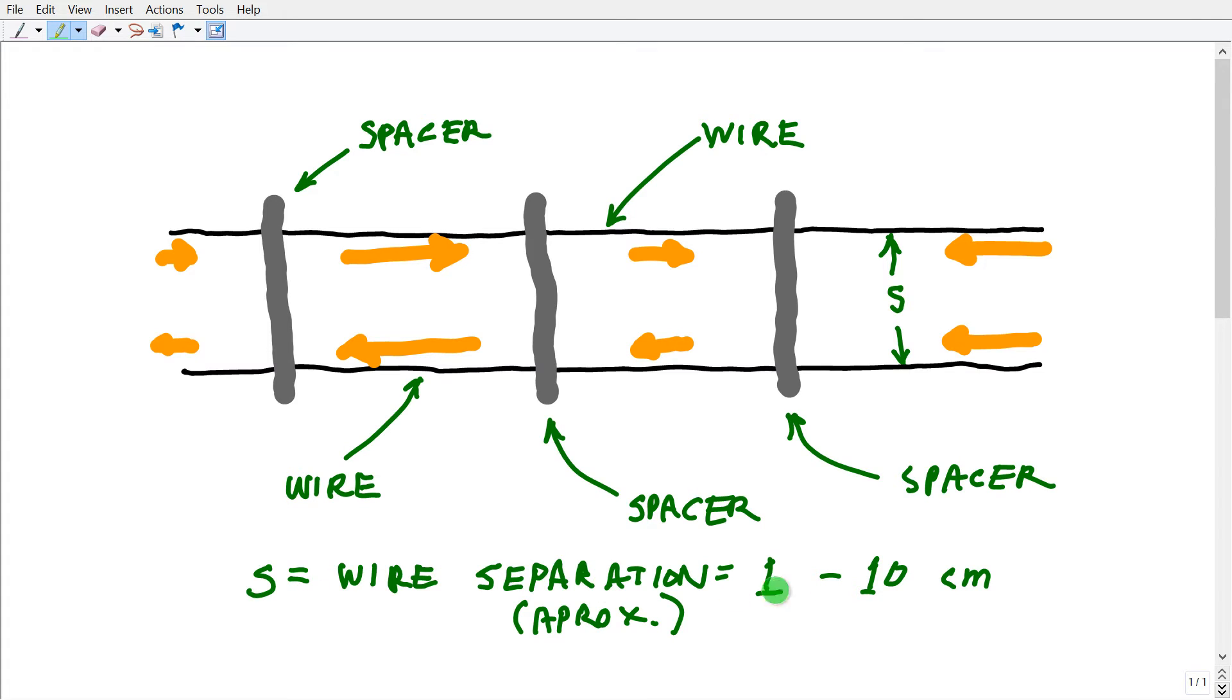The wire separation of an open wire line, incidentally, ranges from about one centimeter to as much as 10 centimeters or sometimes even 20 centimeters. I have in inches that's about three quarters of an inch to maybe six or eight inches.